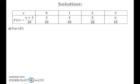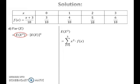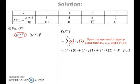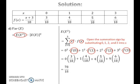To find the variance of x, first find the expected value of x squared. To find E(X²), take the summation of x squared times probability for all x from 0 to 3. Open the summation sign by substituting 0, 1, 2, and 3 into x, then substitute the probabilities and calculate E(X²). Finally, substitute E(X²) and E(X) into the variance formula and calculate the variance of x.